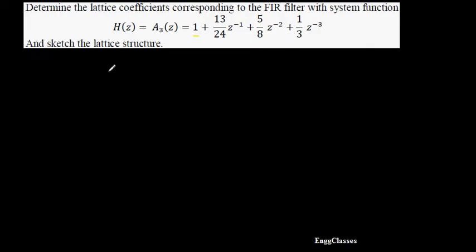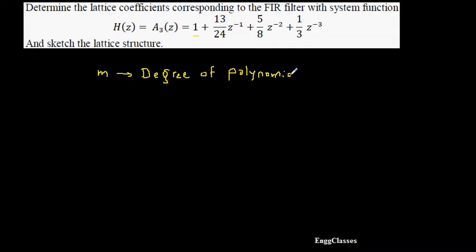Let us begin. The letter M indicates the degree of the polynomial. So what is the highest degree here? It is 3. So M I would take as 3.